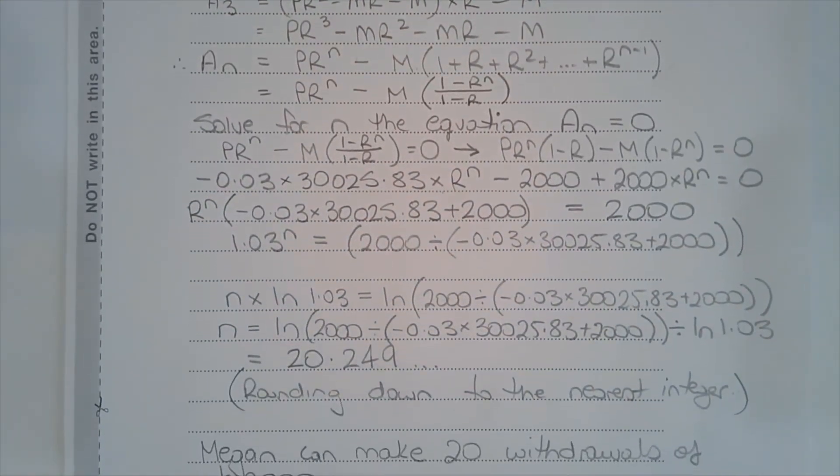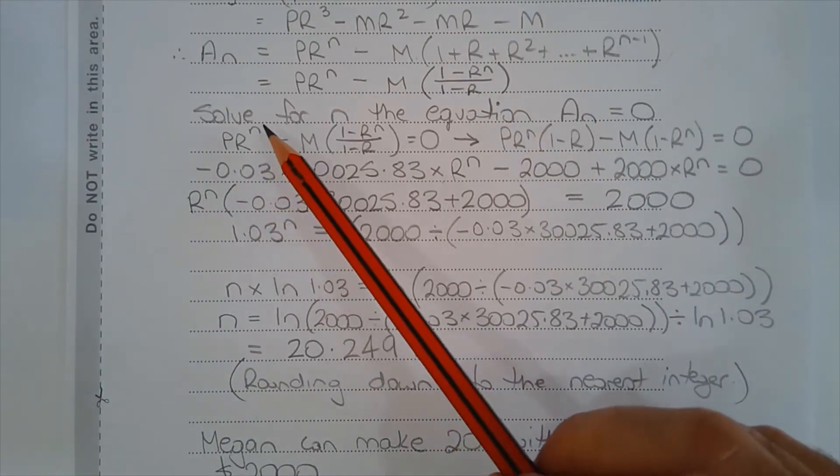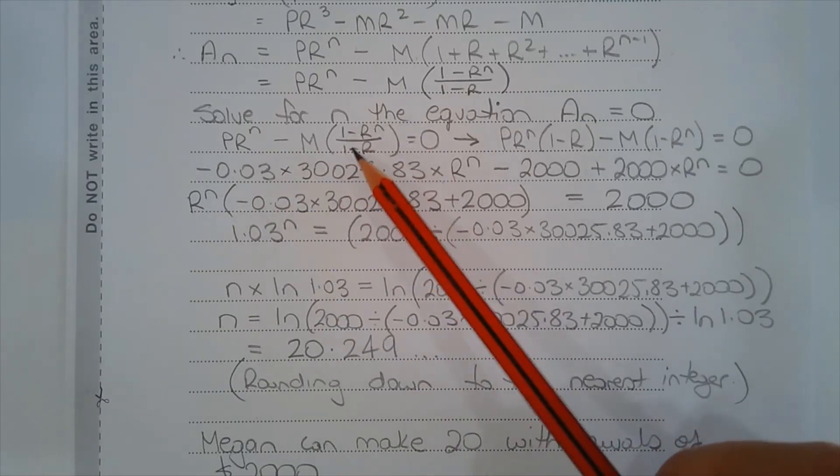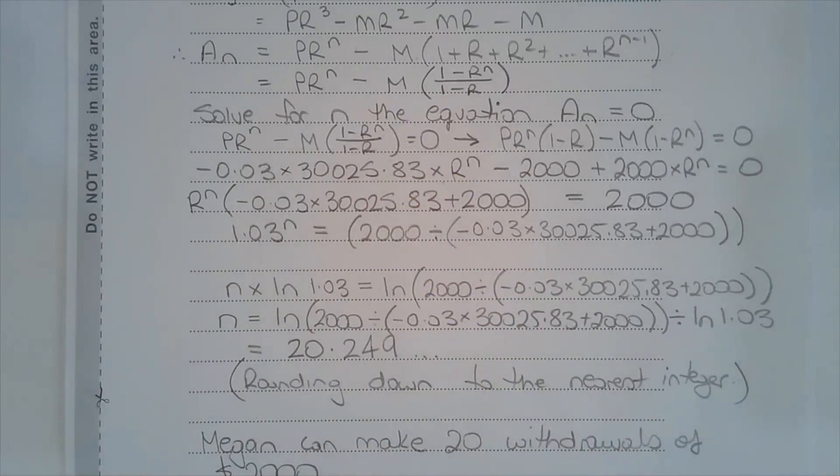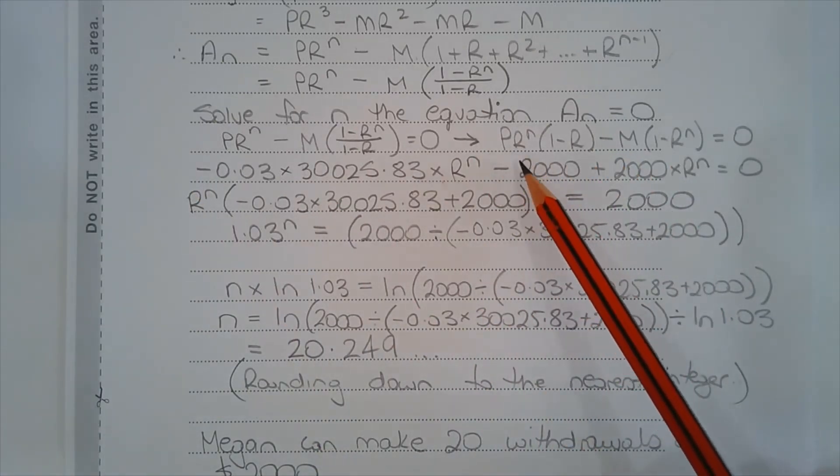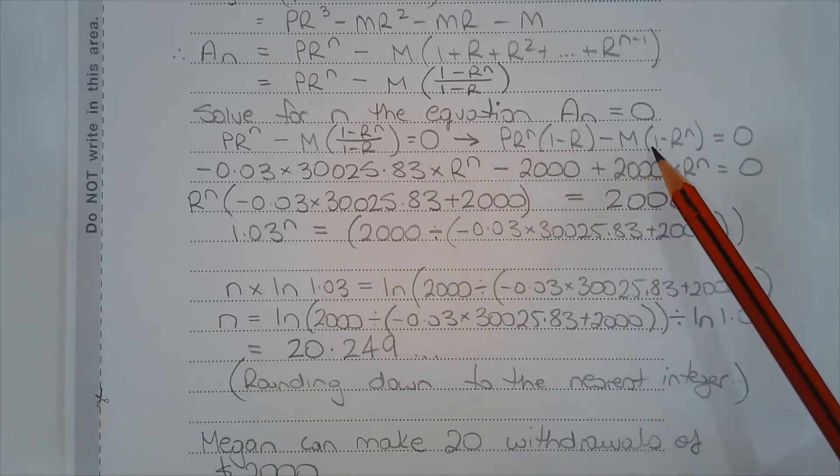The next step is to solve for N the equation AN equals 0. That is PR to the power of N minus M outside of 1 minus R to the power of N over 1 minus R equals 0. Multiplying all sides by 1 minus R, we have PR to the power of N multiplied by 1 minus R minus M outside of 1 minus R to the power of N equals 0.